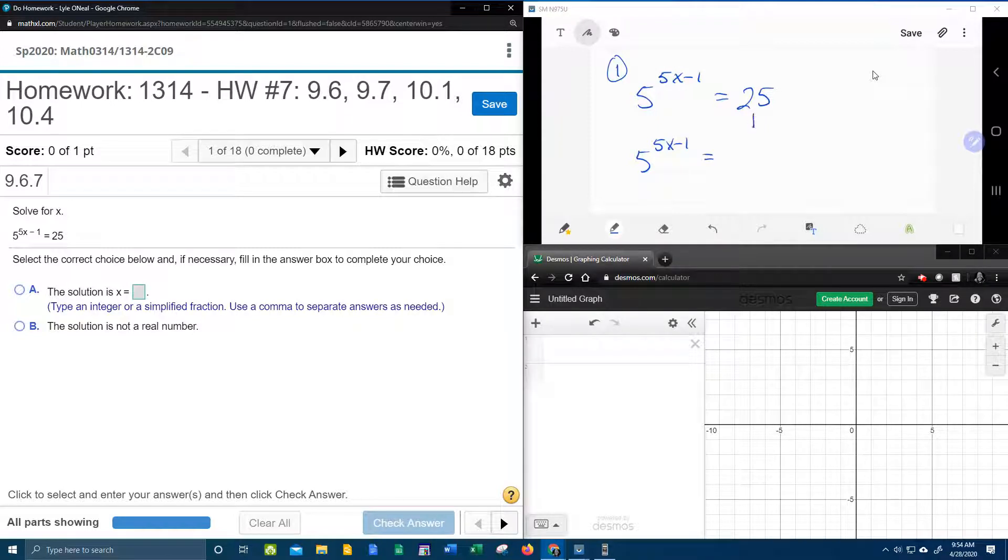What I would like to do with the 25 is convert it to 5 to some power, and that way the bases will be the same on both sides. This is the method of common bases. So what exponent does 5 need to become 25?